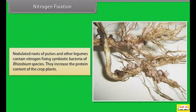Nodulated roots of pulses and other legumes contain nitrogen-fixing symbiotic bacteria of Rhizobium species. They increase the protein content of the crop plants.